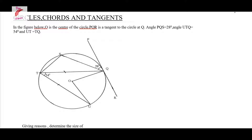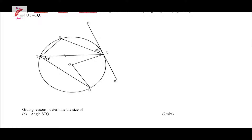On circles, chords, and tangents. So let us try to solve this example. In the figure below, O is the center of the circle. PQR is a tangent to the circle at Q. Angle PQS is equal to 28 degrees, angle UTQ is equal to 54 degrees, and UT equals TQ. So there is the diagram.